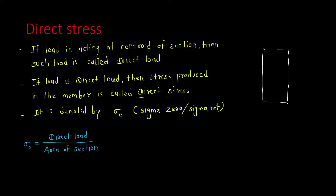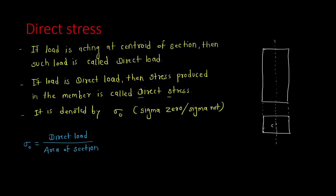This is our vertical compressive member — a rectangular column. This is the section and this axis is the centroidal axis. If the load is acting exactly at the centroid, that means it is a direct load, and the stress produced in this member will be direct stress.